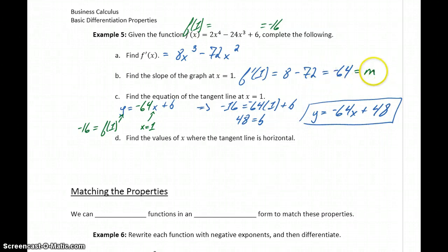So once we have the slope, we can look at whatever point we're considering, in this case at x equals 1, find the function value at 1, and solve for that remaining unknown. The other question we want to answer here is we want to find any values of x where the tangent line is horizontal.